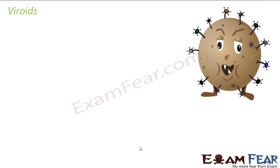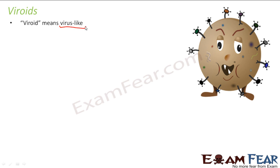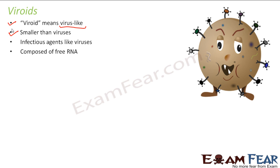Let us now talk about another type of organism called viroids. The word viroid means virus-like, meaning something very similar to a virus. They are even smaller than viruses — viruses themselves are smaller than bacteria, so just imagine how small viroids are. They are also infectious agents like viruses, becoming active only inside a living host cell. They are composed of free RNA, but importantly there is no protein coat in viroids. This is one key difference between viruses and viroids, which is why they are grouped separately.